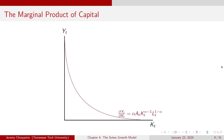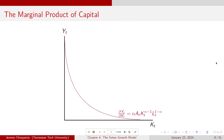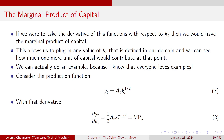If you plot out the marginal product of capital itself — the first derivative function — you get a curve showing the MPK at every value of K. You take the derivative of the production function with respect to K to get your marginal product of capital, then plug in any value of K in the domain to see how much one more unit of capital would contribute at that point.